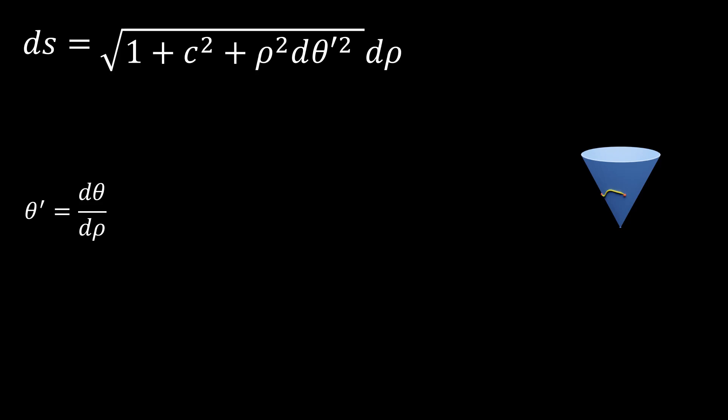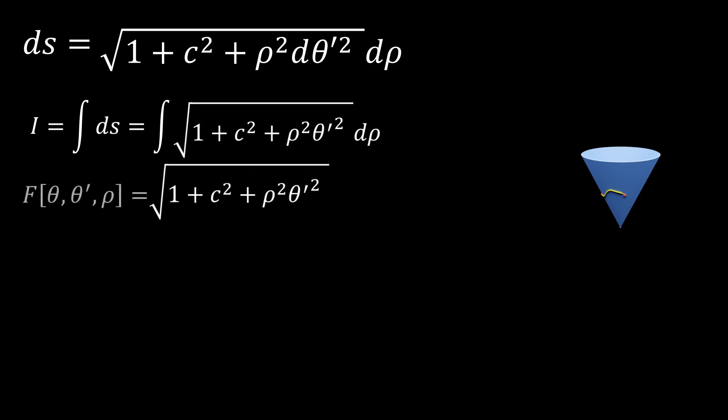To solve this problem, we'll use the calculus of variations, which allows us to minimize a specified integral. In our case, this integral is just the arc length integral, the integral with respect to ds, where we'll replace ds with the square root from earlier. We'll treat the integrand, the square root of 1 plus c squared plus rho squared theta prime squared, as a functional of theta, theta prime, and rho.